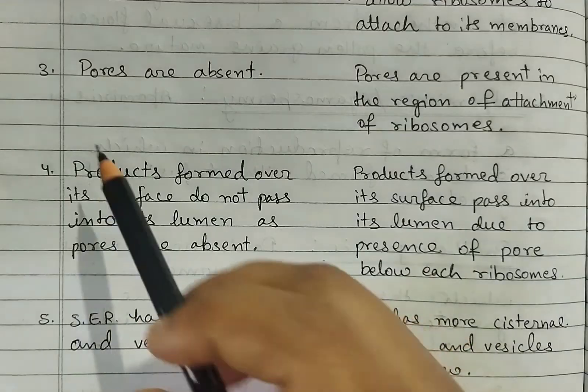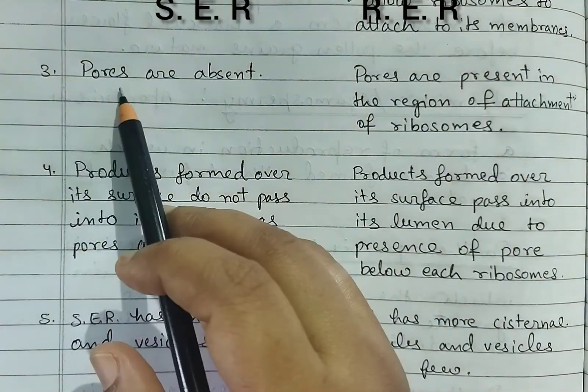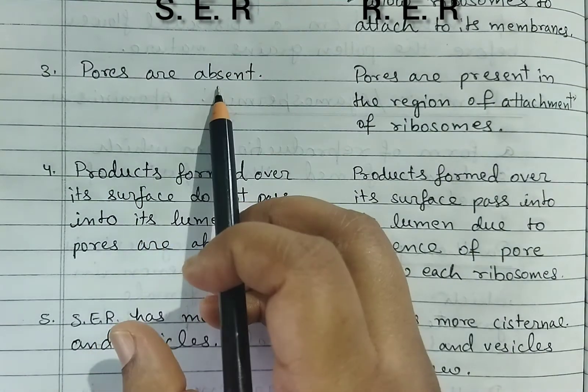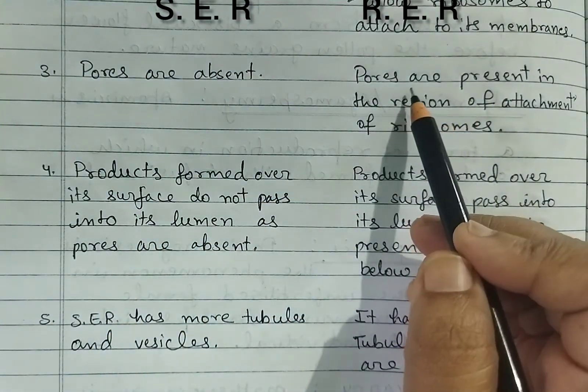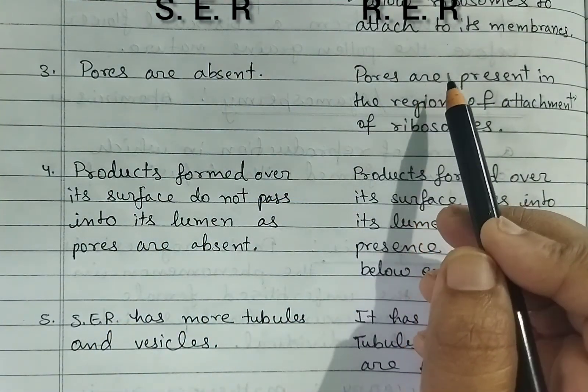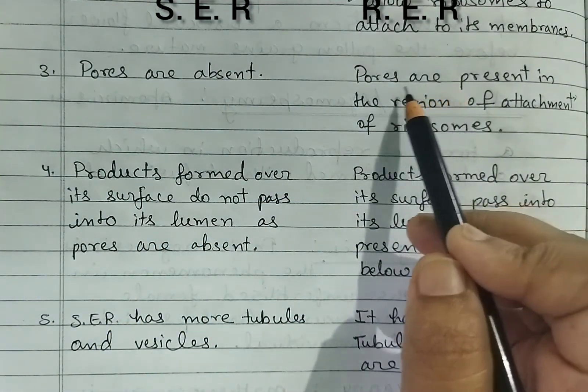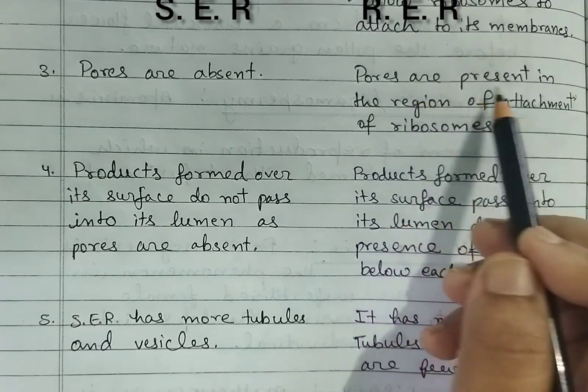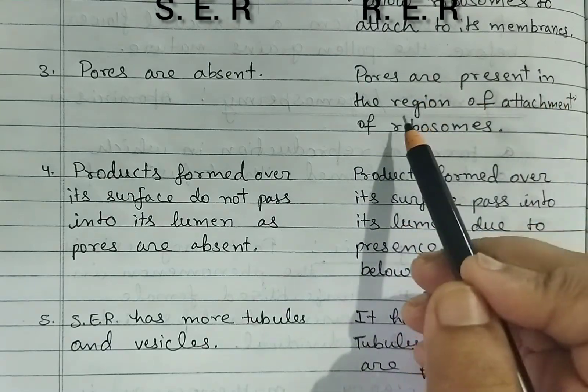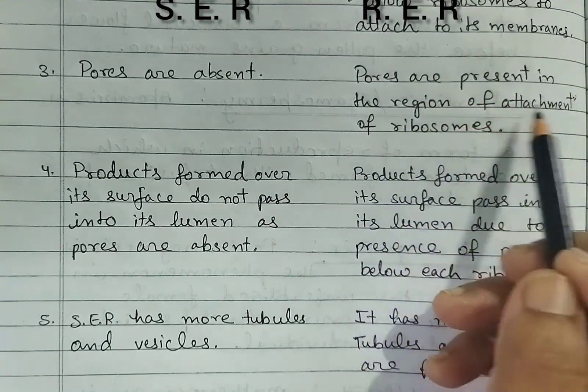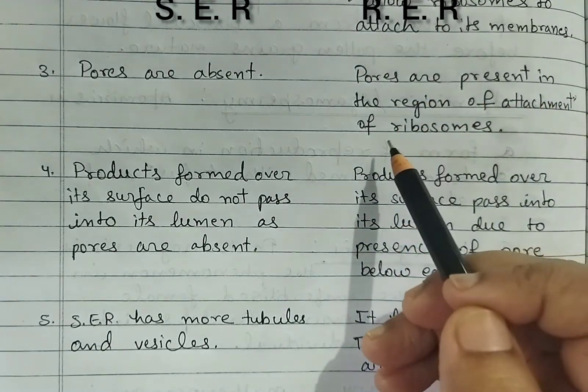Third difference — in smooth endoplasmic reticulum, pores are absent. In rough, pores are present in the region of attachment of ribosomes.